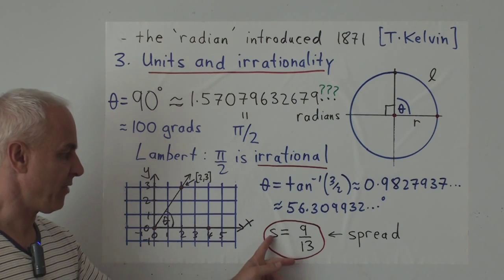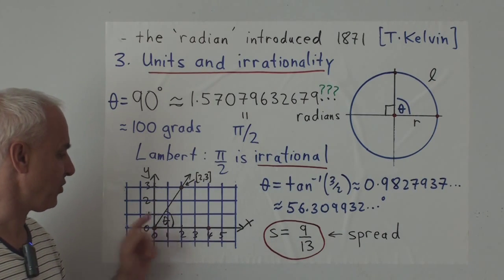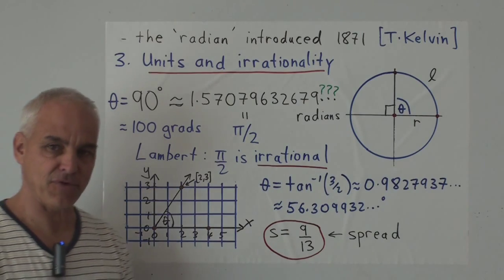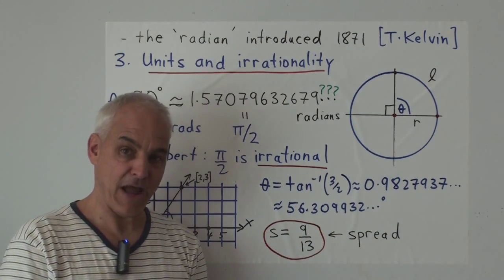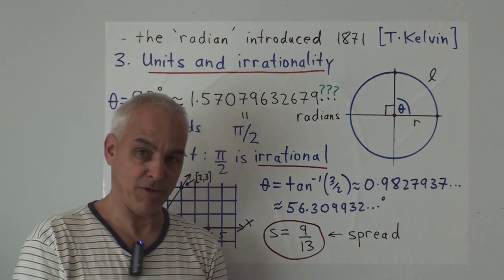To compare that with rational trigonometry, in rational trigonometry the spread between these two lines happens to be 9/13, which you can say is trillions of times simpler and more natural than this kind of gobbledygook.